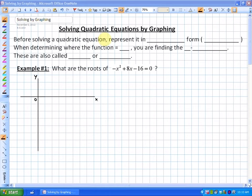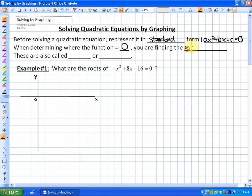Before solving a quadratic equation, it has to be represented in standard form. At least this makes it the easiest to start. So standard form is always making one side equal zero, and is in the form ax squared plus bx plus c equals zero. When determining where the function is equal to zero, you are finding graphically the x-intercepts. These are also called zeros, or roots.